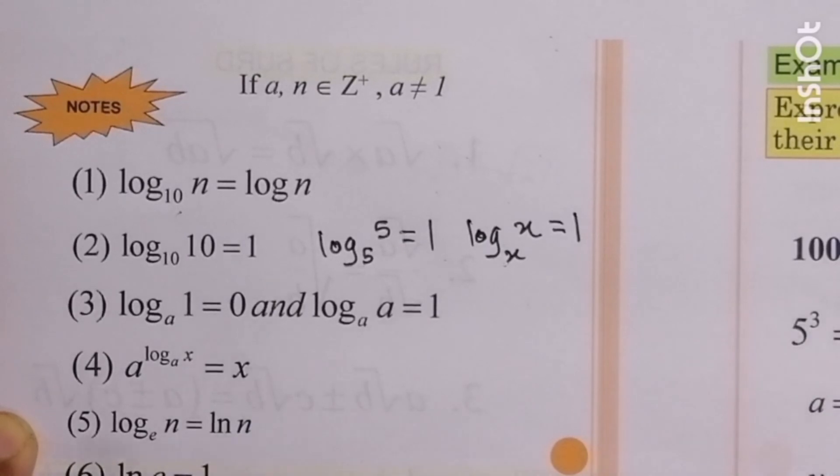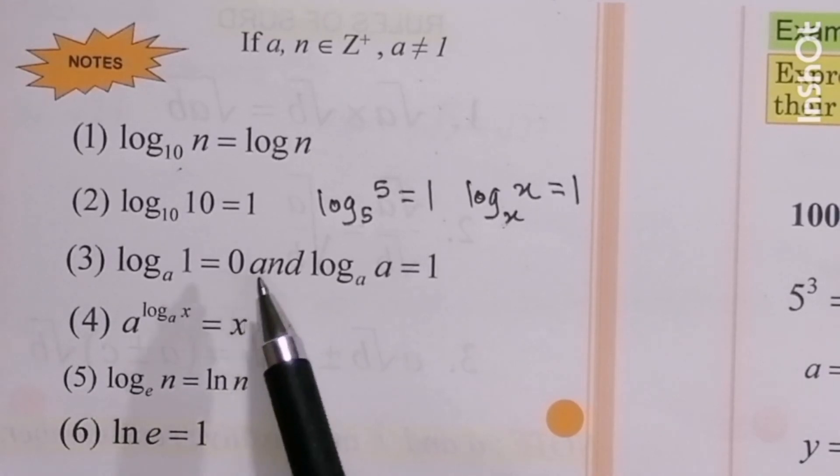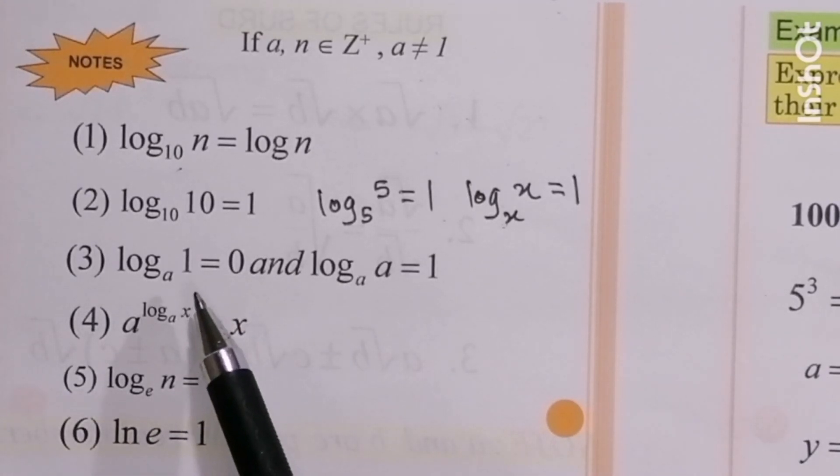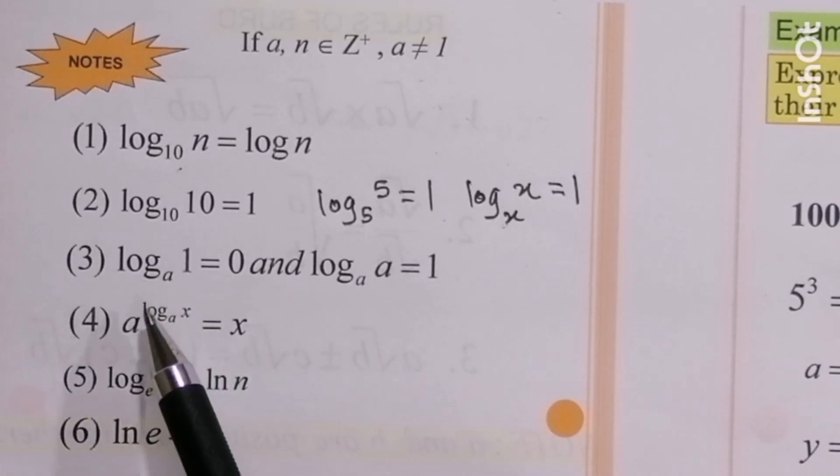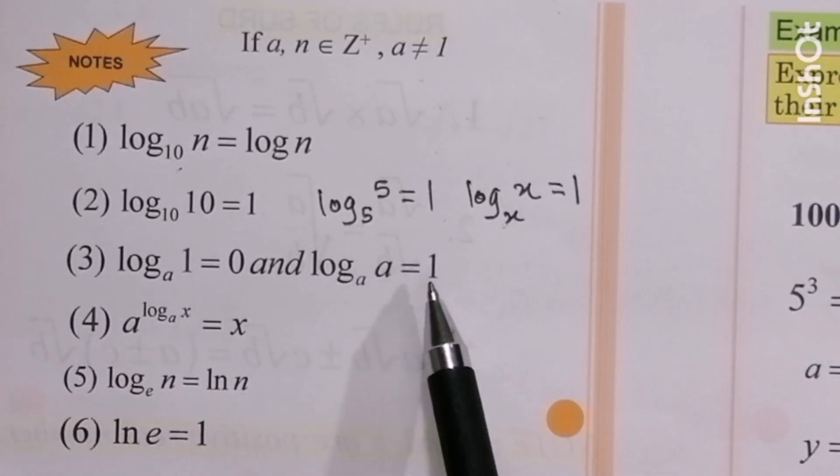Number 3: log 1 base a, the answer is 0. Means log 1 any base, the answer is 0. And log a base a is 1.